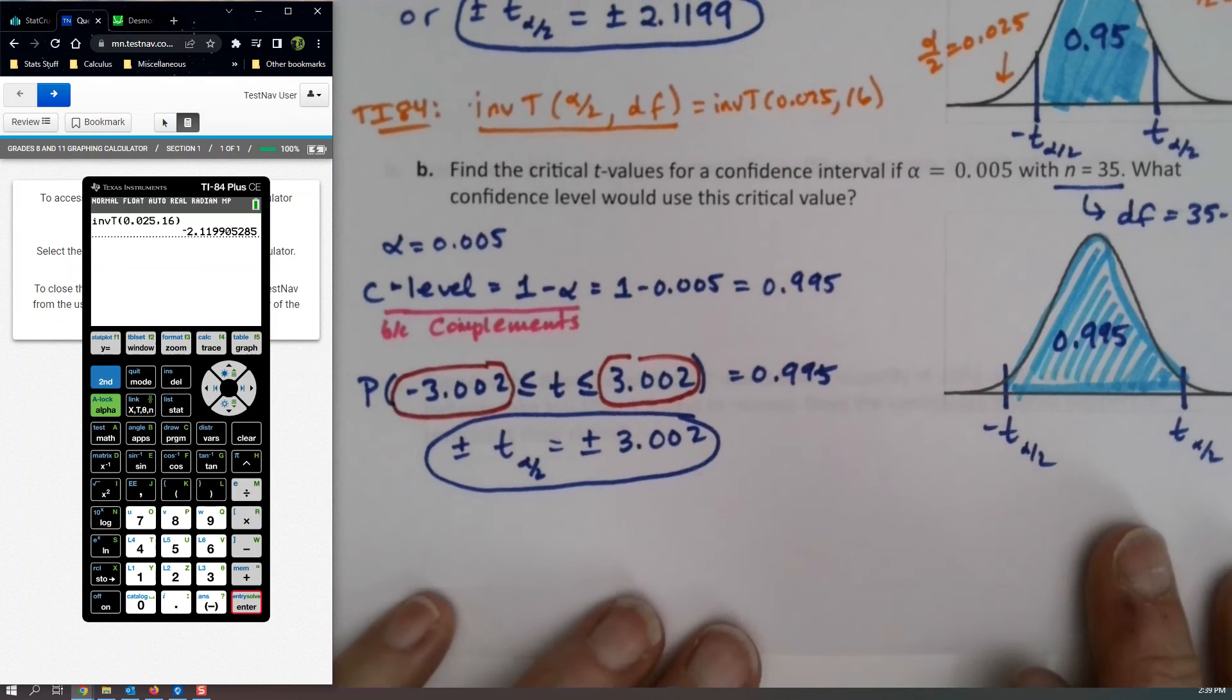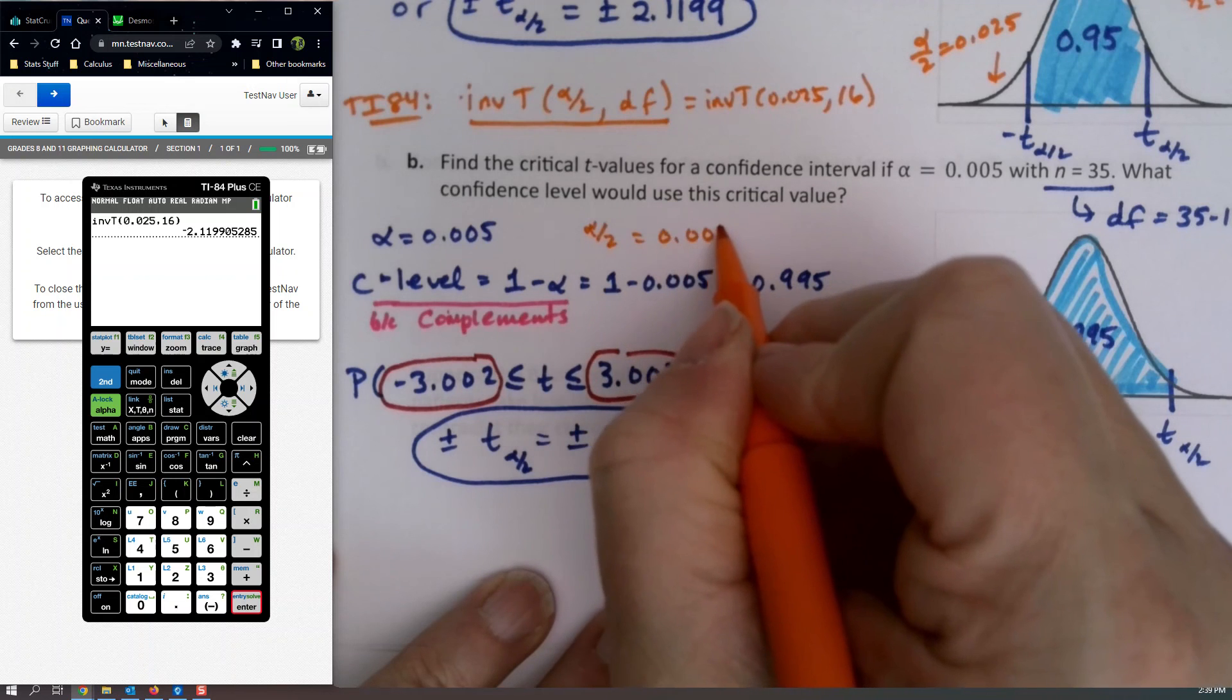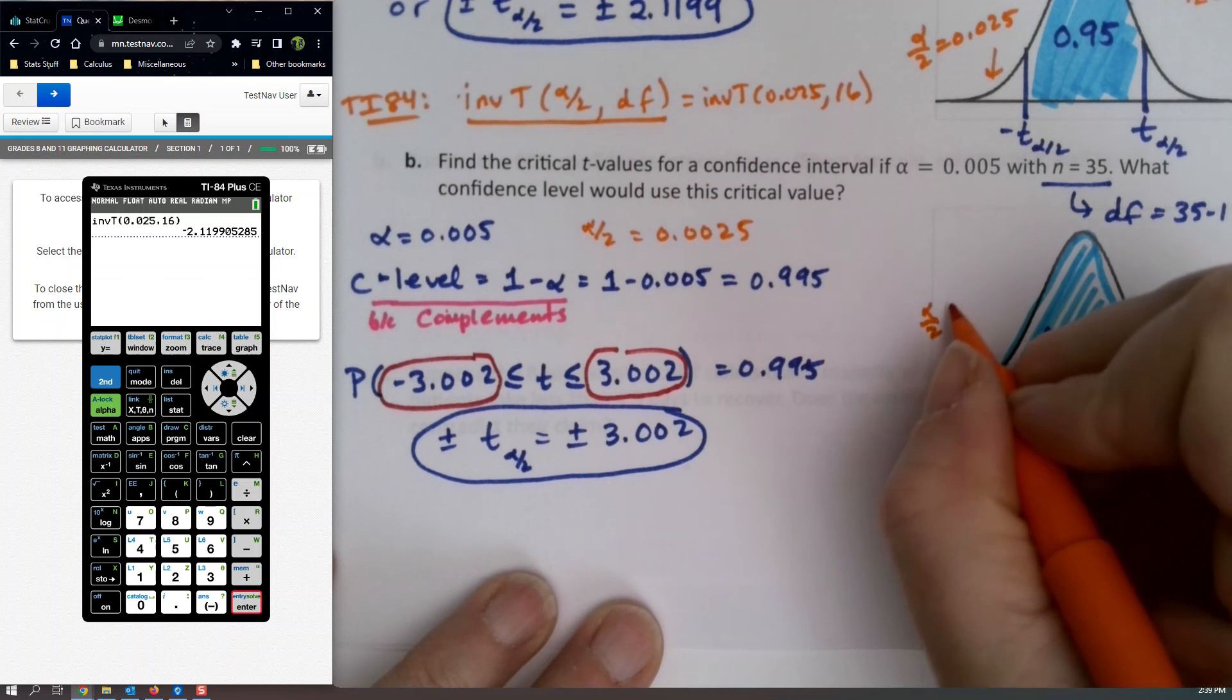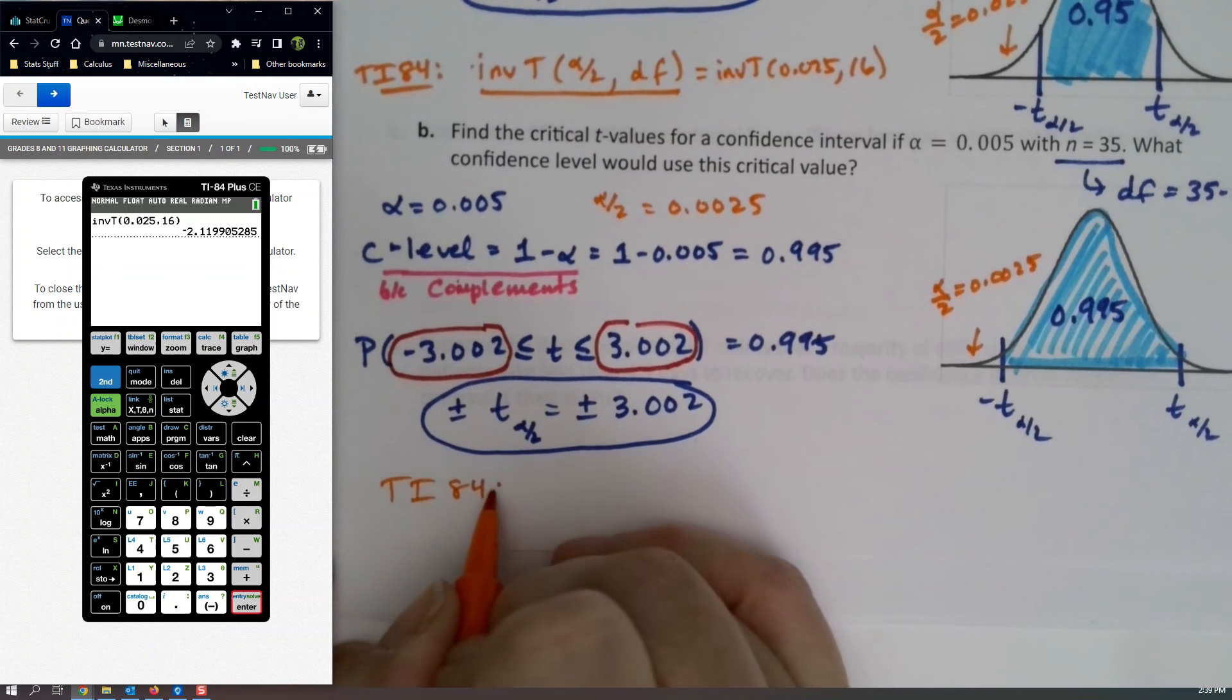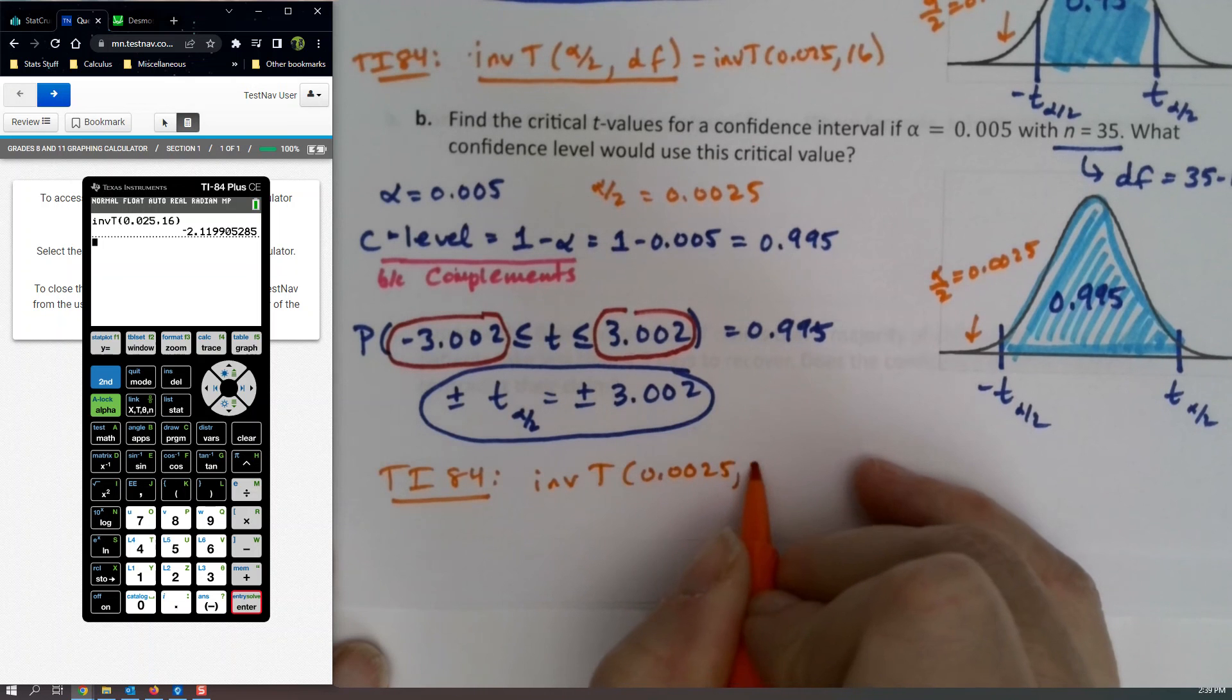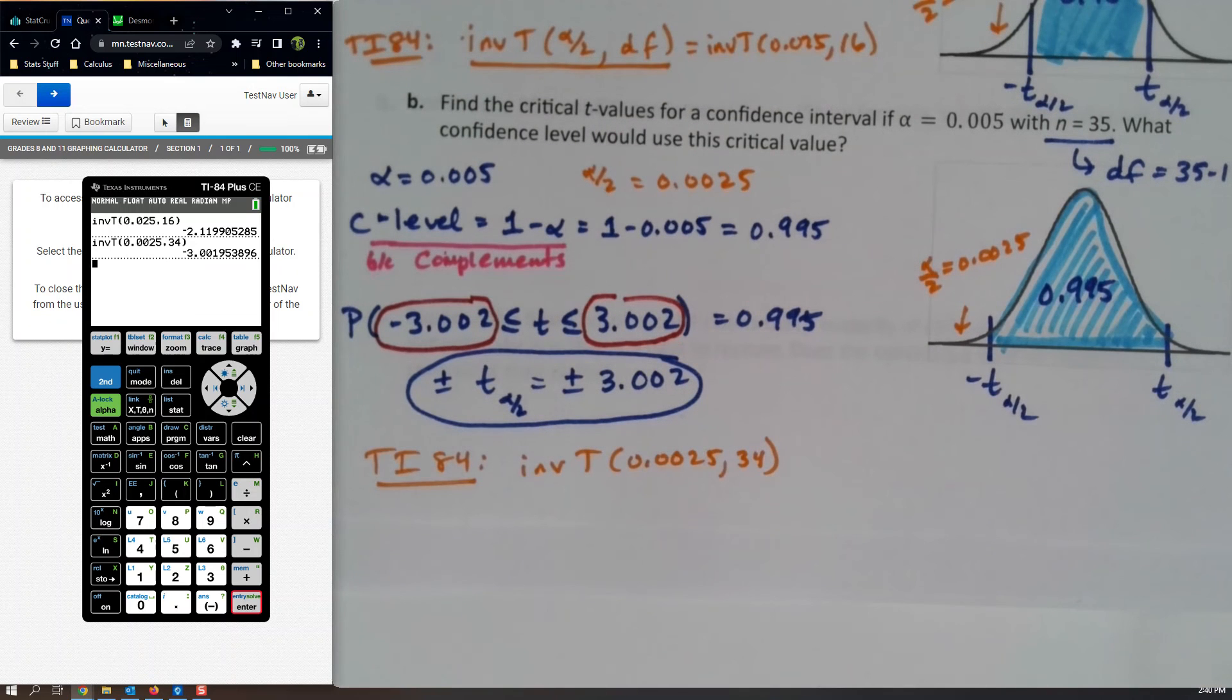Alright, same thing down here. We'll have to get alpha over 2. So alpha over 2 would be .0025, because it's half of that. So this tail right here, I'll label it as .0025. So then down here for the TI-84, it would be Inverse T, .0025, 34. So go back to second distribution. Number 4 is Inverse T, 0.0025 and 34. Paste. Enter. There we have it. Well, I'm just going to leave it. But you can see it's the same answer.